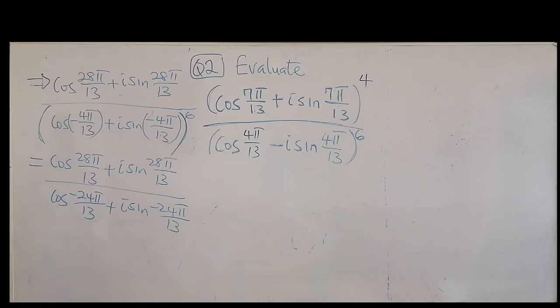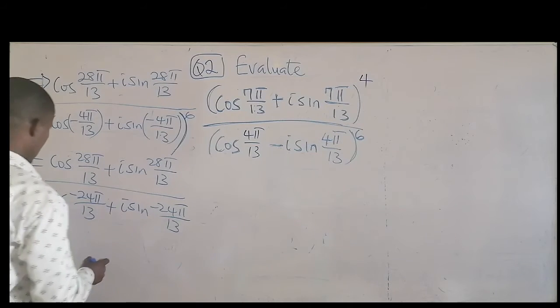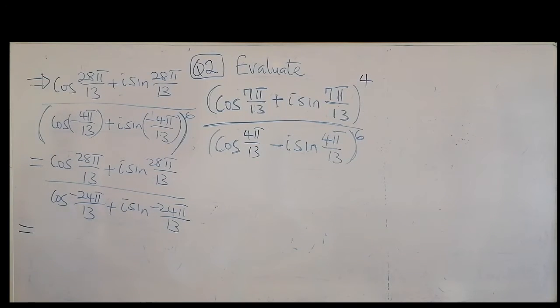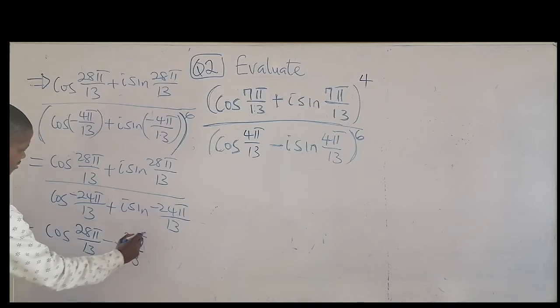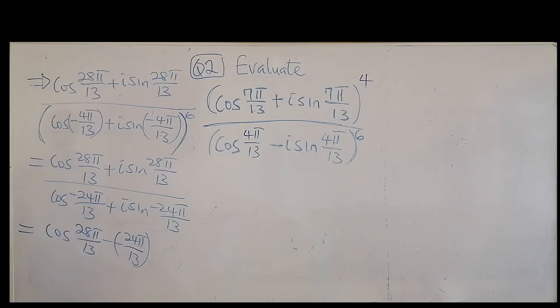What I will do now is apply the division rules, and that will be cosine theta 1, which is 38 pi over 13, minus minus 24 pi over 13. This is your theta 2, this is your theta 1.